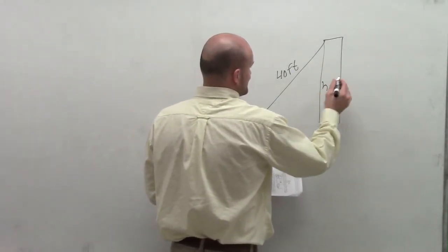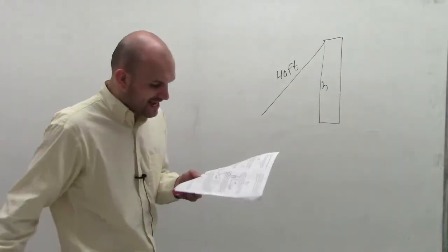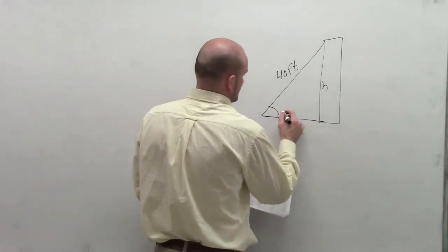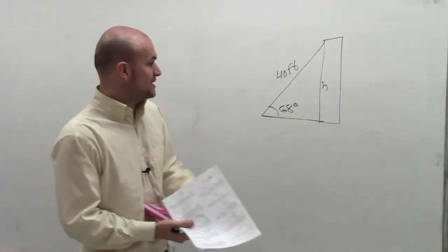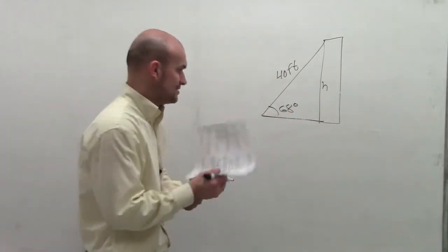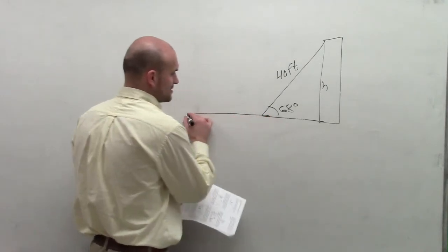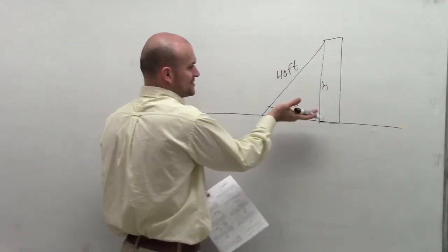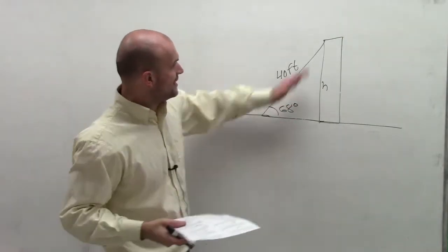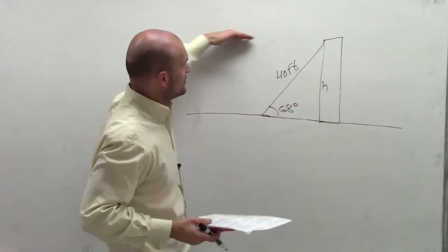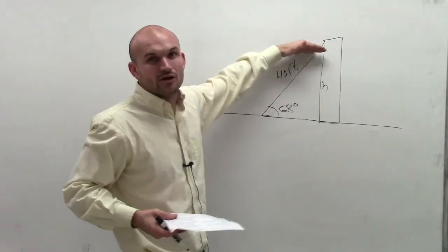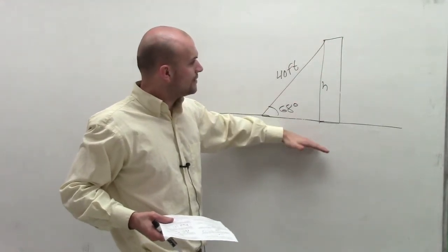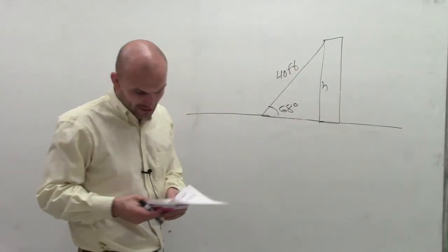So now we want to figure out what h is. Remember, angle of elevation is your angle above your horizontal. We're going to have a ground, so here's your ladder leaning on the ground. Here's your horizontal, and 68 degrees is going to be the angle above. If you were to draw a horizontal and go down, that would be an angle of depression, which we're not dealing with. It says angle of elevation, so it's going to be above your horizontal line.